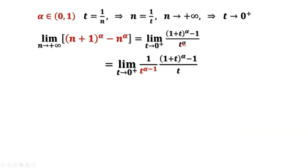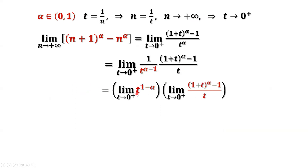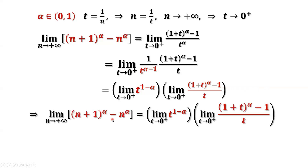We can split t to the power of alpha into a product of t to the power of alpha minus one, times t. We can then rewrite this limit as a product of two limits, if both limits exist. The first limit certainly goes to zero because one minus alpha is positive and t goes to zero from the right-hand side. Now we need to derive the second limit.